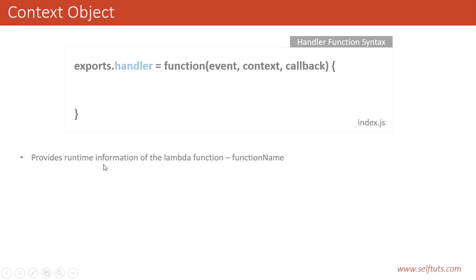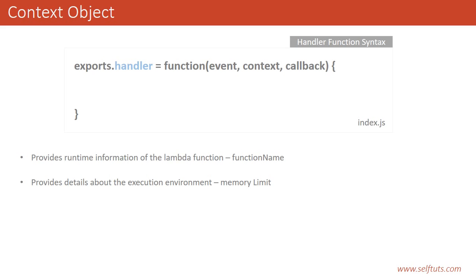A context object in the AWS Lambda function provides runtime information of the Lambda function, like the name of the function which you are invoking. It also provides details about the execution environment, like what is the memory limit for your Lambda function — if you exceed this memory limit, your Lambda function will crash. The context object contains some properties and methods which we'll see later on.